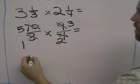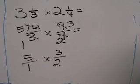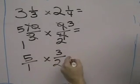So we now have 5 over 1 multiplied by 3 over 2. Now you just multiply straight across,